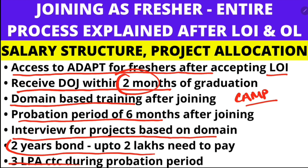When you join the company, you have to accept a training agreement with a two-year bond. The bond amount is two lakhs. However, the amount reduces with each month you stay — for example, if you complete one year in the company, the bond amount is only one lakh. So the bond amount is based on the number of months remaining.